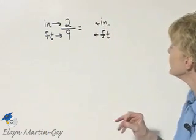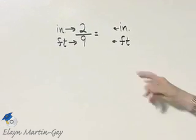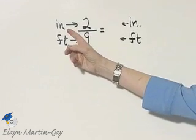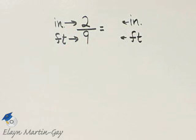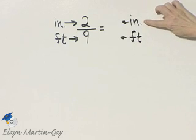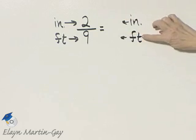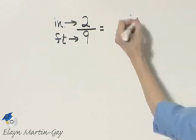So let's look at a beginning setup of our application. Remember we're told that 2 inches corresponds to 9 feet. So over here I'm reminding myself that I'm going to place inches in the numerator and feet in the denominator of the proportion, or the ratio, on the right.